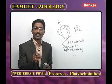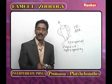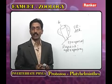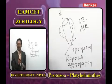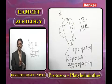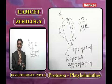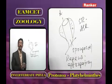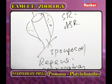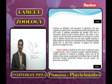Development is indirect — larvae are present in the life history. In Porifera, only the cellular grade of organization is present; tissues, organs, organ systems, and coelom are all absent.